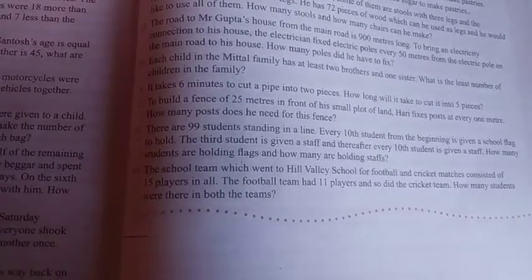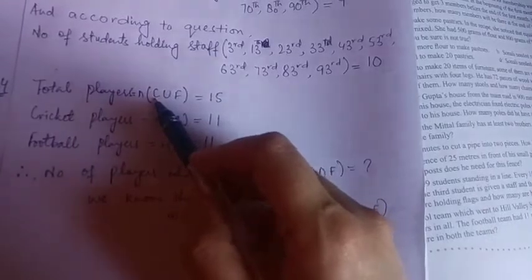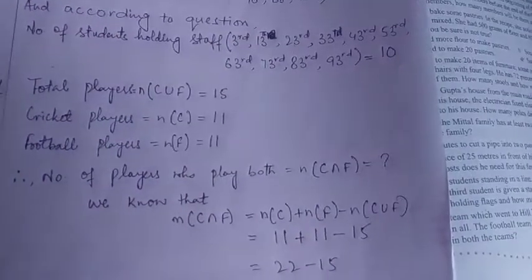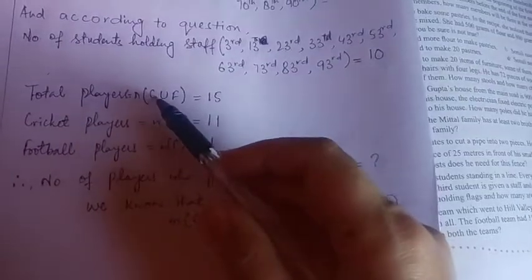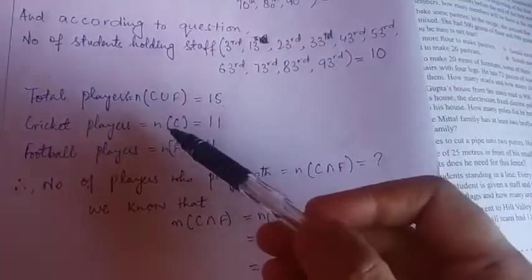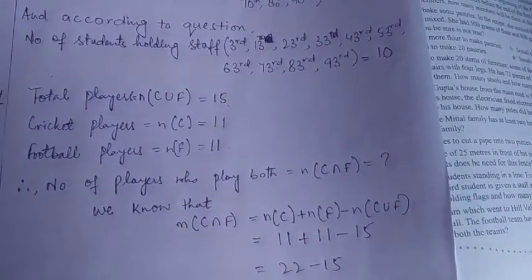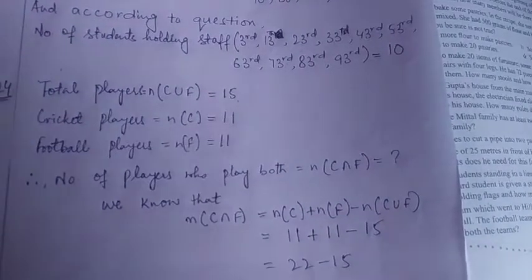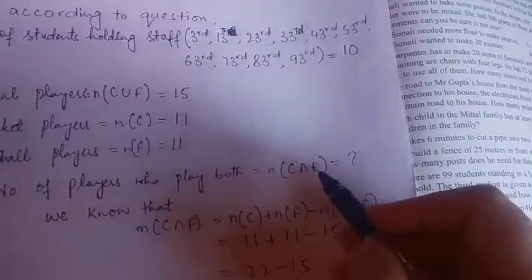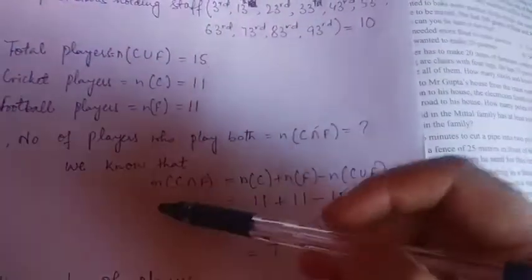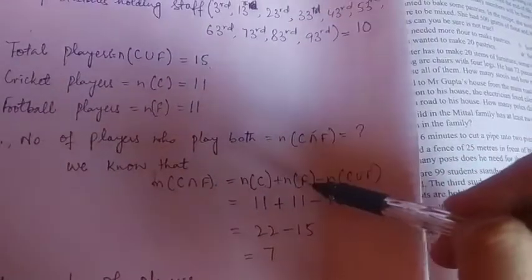I hope samaj mein aa raha hai. Because 11 bachchon ne ye khela and 11, so did then, also 11 ne cricket khela. But the thing is ki kaun se itne ne dono cheezen khele? Okay students, this kini aap yahan pe dekhe. Total players C union F. This C is for cricket, this F is for football. This is the sign of union. Union ka matlab hota hai ki dono. Okay, so it is 15. And what, number of students C union F means jo ne cricket bhi khela, jo total hai matlab. Okay, wo kitne hai? 15. Aapke cricket players hai and C, that means number of students jo cricket khela hai, those are 11. So number of students those play football, they are N F. So we have to find out the number of players who play both. Both ka matlab hota hai this is N and C, this is intersection F. Intersection means that means number of players who play both games. So there is a formula for solving these questions that is N C N F is equal to N C plus N F minus N C U F.